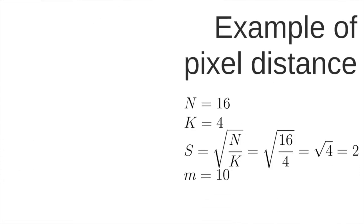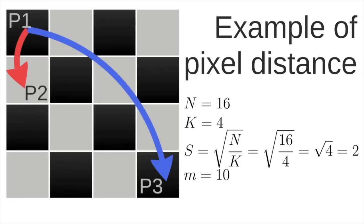Just to understand well the distance between two pixels, let's provide a simple example. Suppose that we have black pixels all over the image and also some white pixels. We want to compute this specific distance between pixel 1 and pixel 2 and also between pixel 1 and pixel 3. And for this very basic image we have these parameters N equal to 16, I mean 16 pixels. And suppose that I want to create four superpixels. The S value as described previously will be equal to this equation equal to 2. And let's assume the variable m equal to 10.